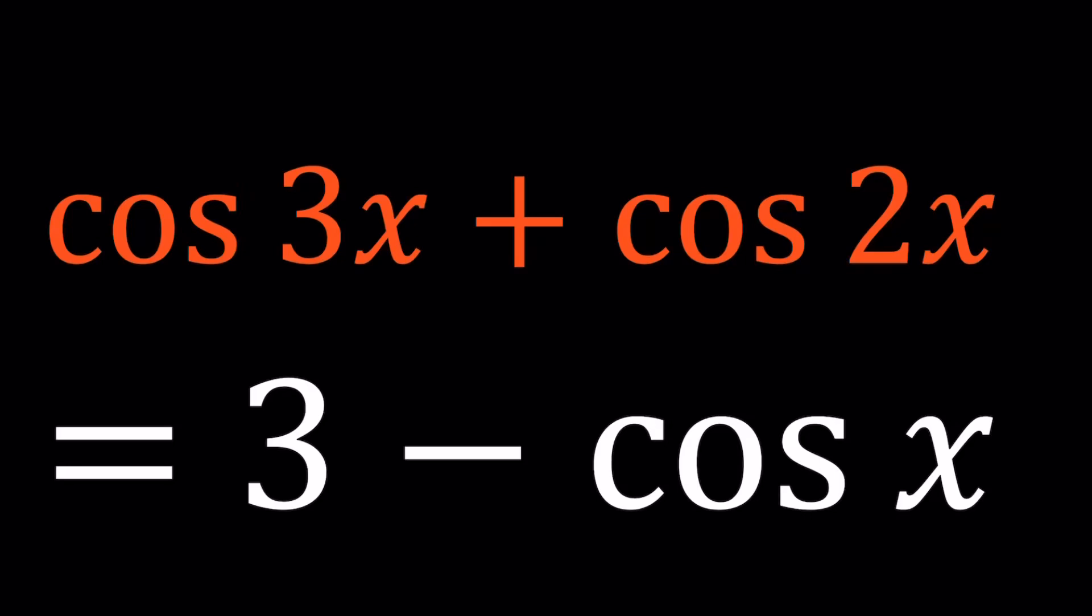Hello everyone. In this video we're going to be solving a nice trigonometric equation. We have cosine of 3x plus cosine of 2x equals 3 minus cosine of x.